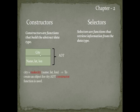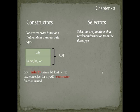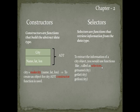Now imagine there is a City abstract data type having information of name, latitude, and longitude. To create an object: city = make_city(name, latitude, longitude). To create an object for the City ADT, a constructor function is used. Here, make_city is the constructor and it is defined to create the object.